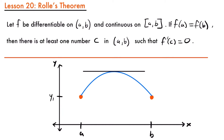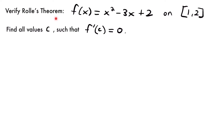Any other kind of line you would draw between these two points is going to have some point where the slope is zero. That is the whole idea of Rolle's Theorem. What we like to do is take functions, give an interval, and find the values of c where the slope is zero. So let's look at an example where we verify that this theorem works. We have the function f of x equals x squared minus 3x plus 2, and we are interested in the interval from 1 to 2. We want to find all values c such that the derivative at that point is equal to zero.